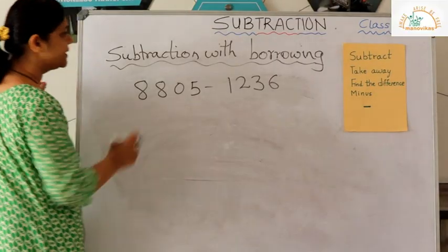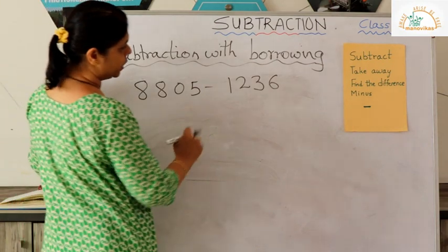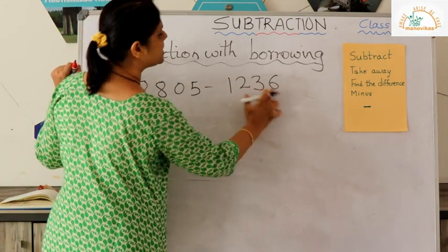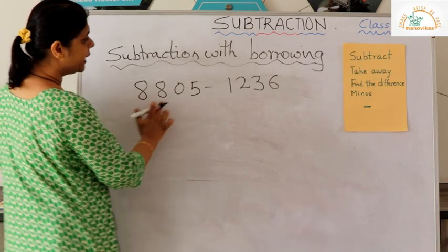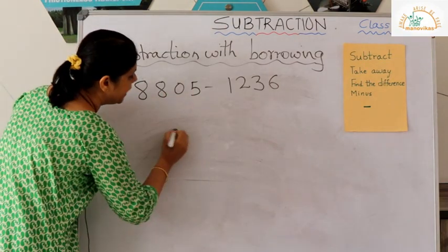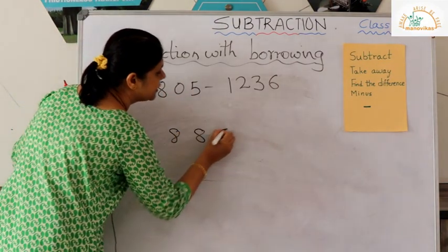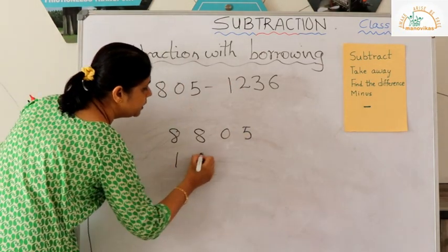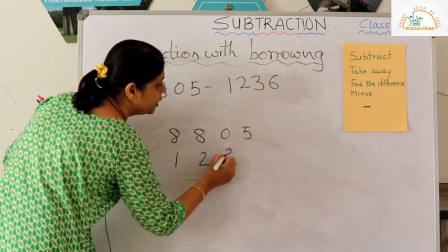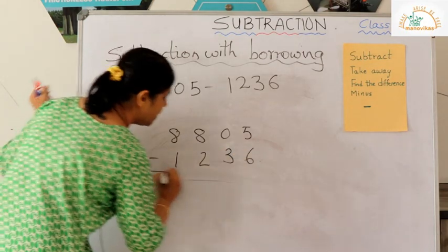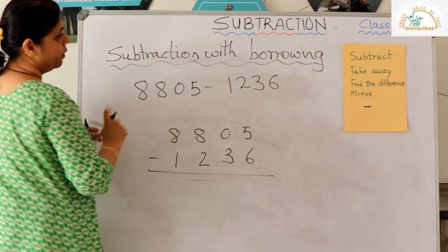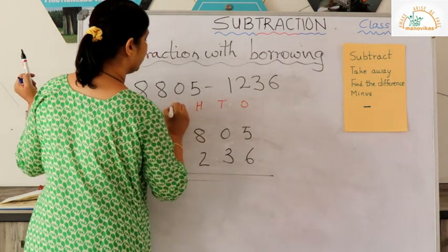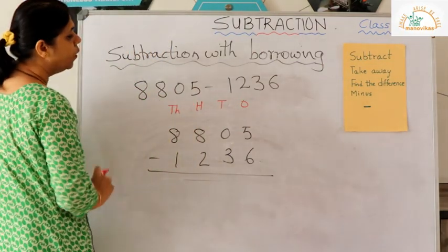Now let us see the next example. We need to subtract 1236 from 8805. Write 8805 first, then 1236 below it with a minus sign. Write the place values: ones, tens, hundreds, thousands.